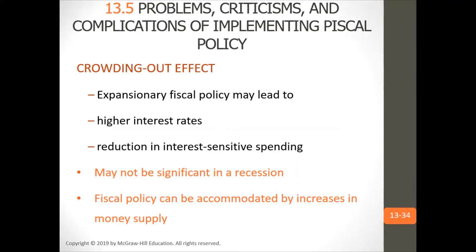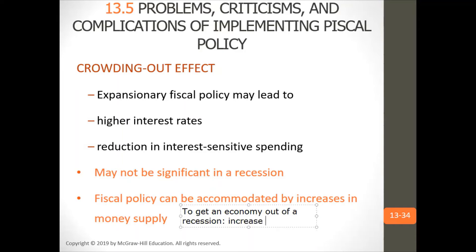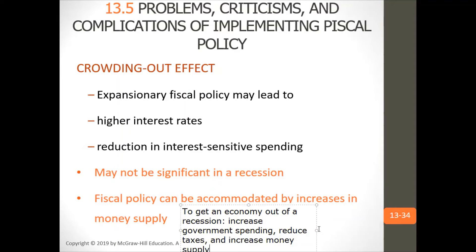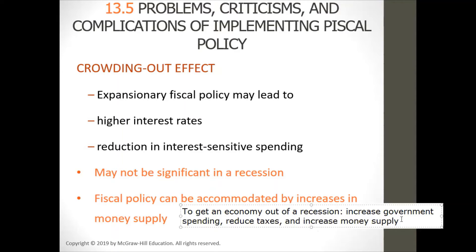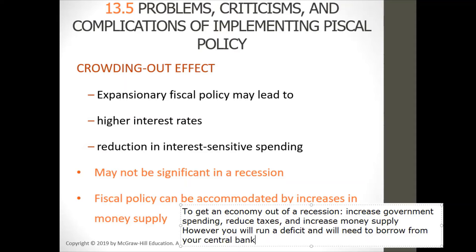Crowding out effects: expansionary fiscal policy may lead to higher interest rates and a reduction in interest-sensitive spending, but this may not be significant in a recession. Fiscal policy can be accommodated by increases in money supply. To get an economy out of a recession: increase government spending, reduce taxes, and increase money supply — however, you will run a deficit and will need to borrow from your central bank, foreign investors, or domestic investors.